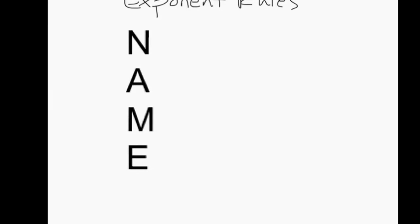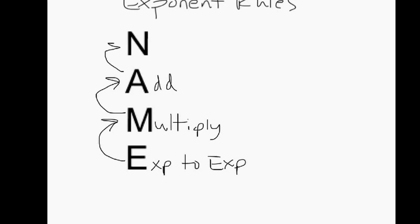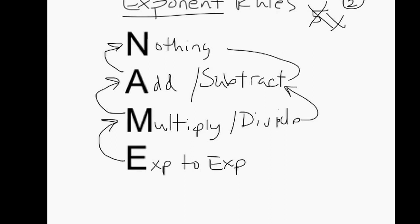Our exponent rules. Exponent to exponent: if we see an exponent to exponent problem, that means we multiply. If we see a multiply problem, that means we add. Remember, these are superpowers. They don't follow the same rules as other stuff. When we see an add problem, we do nothing. And these are the things we do to the exponents themselves. Regular numbers get treated regularly. For these, this is only what we do with the exponent, which is just the little number on top, not the number out in front. If it's a divide problem, we actually subtract. And if it's a subtract problem, we still do nothing.